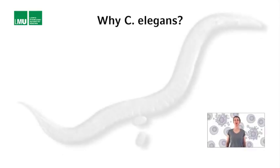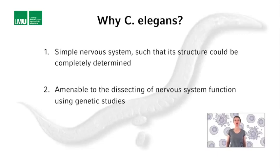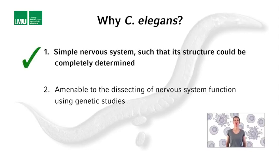Coming back to Sidney Brenner and his search for a model organism suitable for the dissection of nervous system function. With C. elegans he had found an organism with a simple, essentially invariant body plan and nervous system, and a highly reproducible development — perfect for his purpose. But what about the second criteria? The organism should be amenable to the dissection of nervous system function using genetic studies.